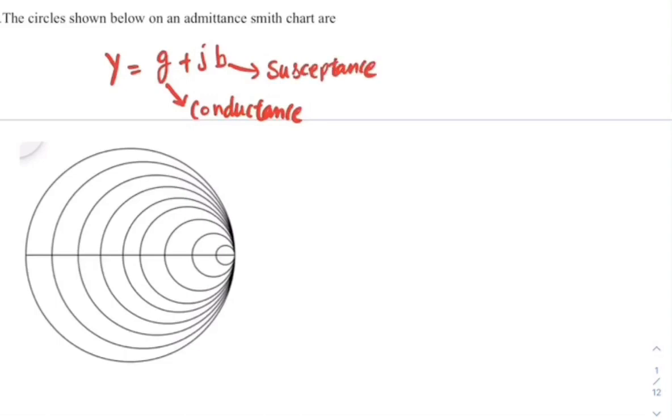If you try to represent with a normalized value, then normalized admittance equals normalized conductance plus j times normalized susceptance.